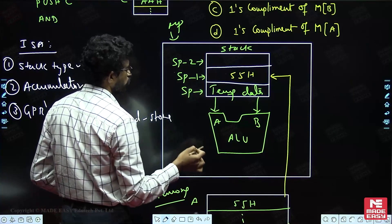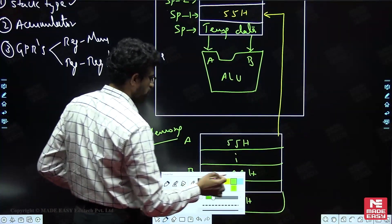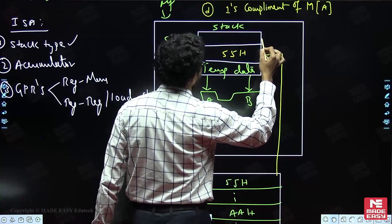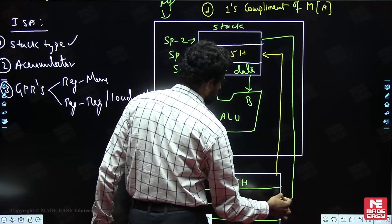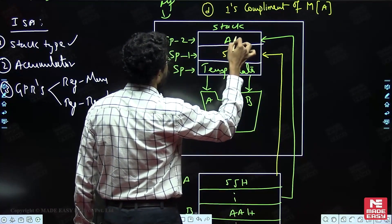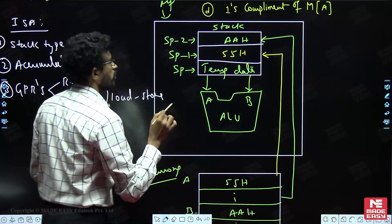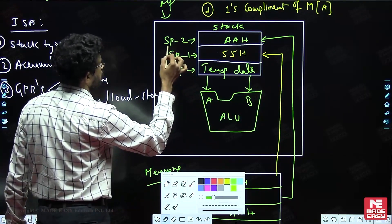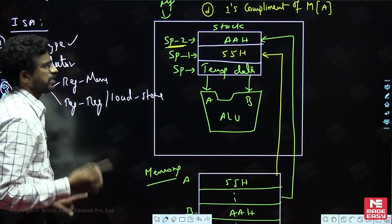The next instruction is Push B. Push is used to store data into stack memory. Therefore, the stack pointer is decremented once again (SP minus 2), and the data from B — which is AAH — is brought into the stack at that new location. The current value of the stack pointer is now at this location.